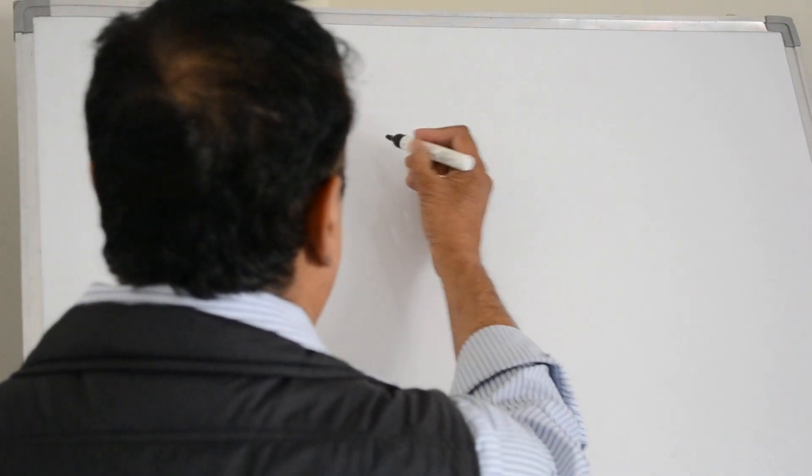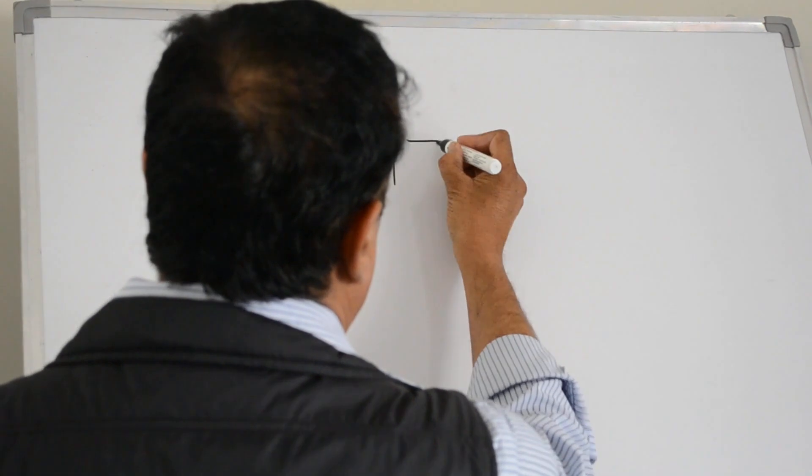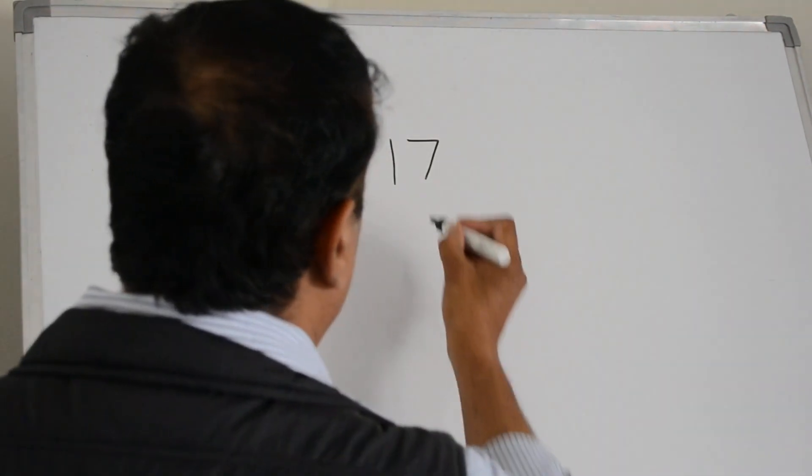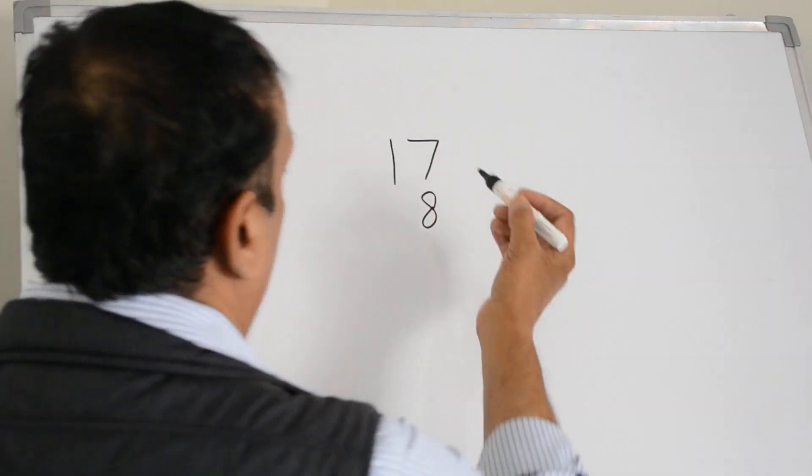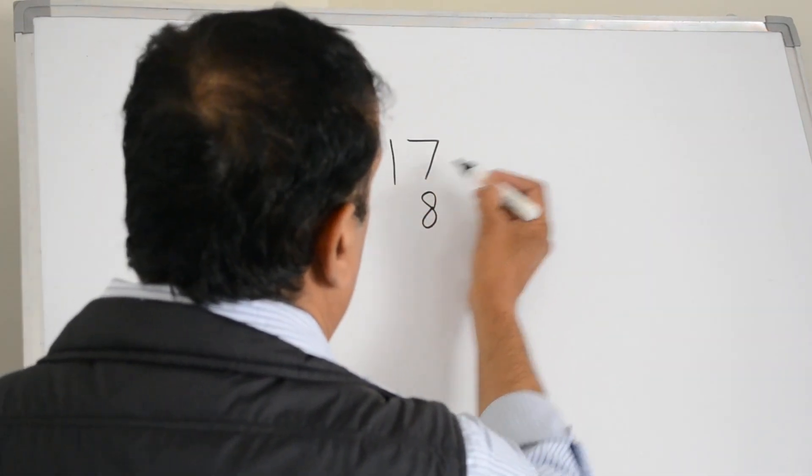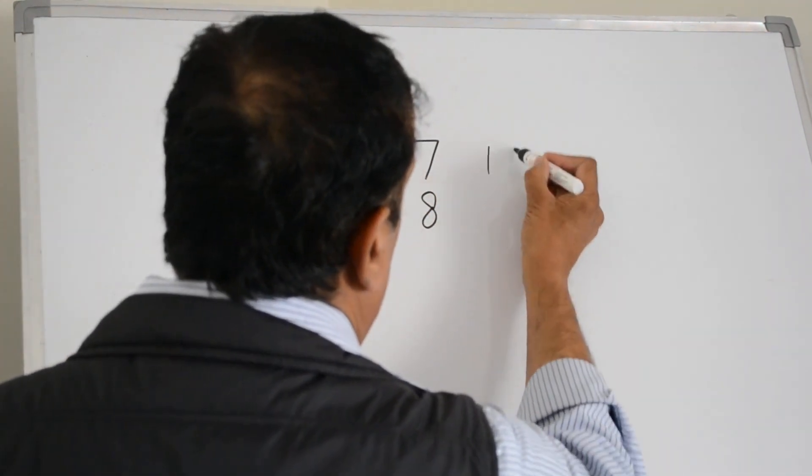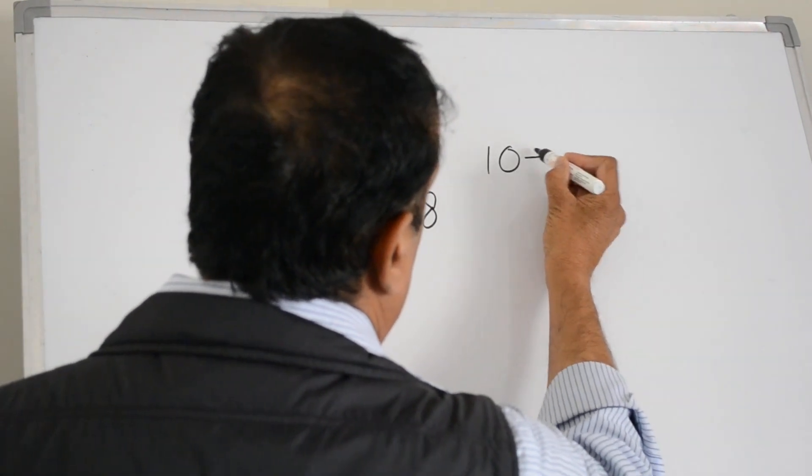Suppose we want to know how much 17 eights are. So this is 17, it is equal to 10 plus 7.